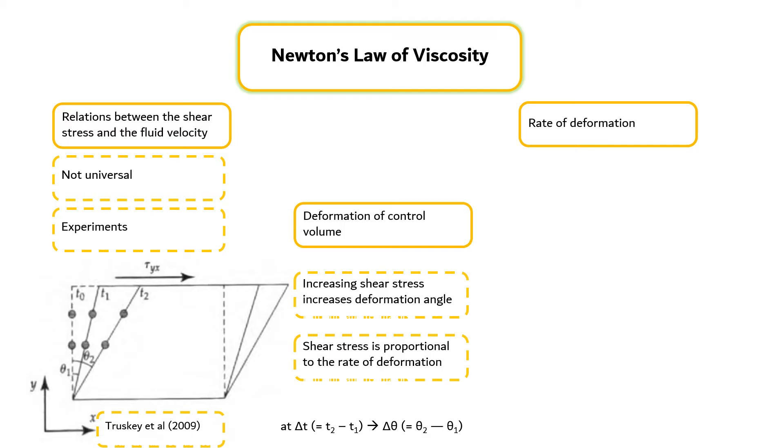The rate of deformation can be written as shown in equation 20. The velocity gradient is known as the shear rate. Thus, constitutive relations take the form as shown in equation 21.